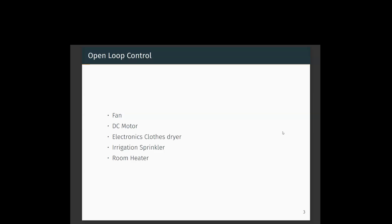Similarly, a DC motor's speed changes based on the current input you give. An electronic clothes dryer — you put the clothes in and turn on a switch so that drying happens. It doesn't take into account whether the cloth is very wet or almost dry; based on whatever input the user gives, drying happens at a fixed temperature with no feedback mechanism. An irrigation sprinkler sprinkles water based on the pump motor speed and doesn't sense the moisture of the soil. In an open loop system, we just give an input and get a corresponding output.